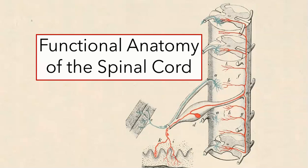The vertebrate spinal cord integrates sensory information from the body. It can coordinate reflexes at the level of the spinal cord, and it will also relay information to the brain. The spinal cord also carries descending information from the brain to the spinal cord, directing the activity of muscles and other tissues.